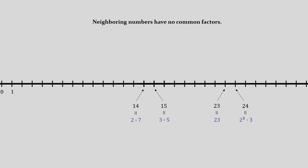One last example. Take two larger neighbors, 4,725 and 4,726. The former turns out to be 3 cubed times 5 squared times 7. The latter is 2 times 17 times 139. No common factors.